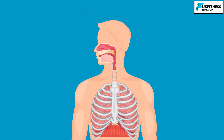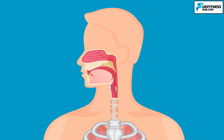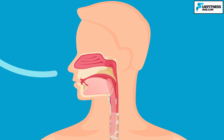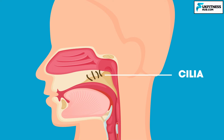Let's look at these individual parts in more detail. Air enters the respiratory system through the nose or the mouth. If it goes in the nostrils, the air is warmed and humidified. Cilia, which are tiny hairs, protect the nasal passageways and other parts of the respiratory tract, filtering out dust and other particles that may enter through breathed air.